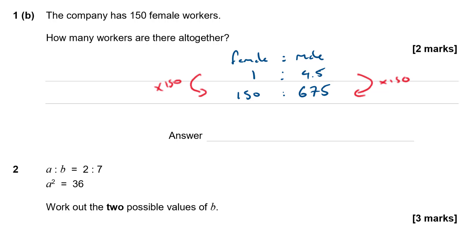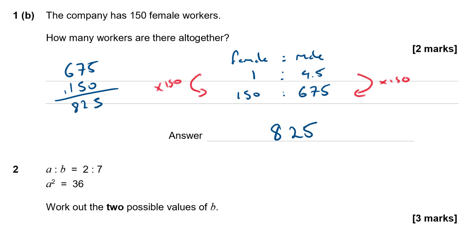So how many is that altogether? 5, 7 and 5 make 12, so carry 1 — 6, 7, 8. I make that 825 employees altogether.